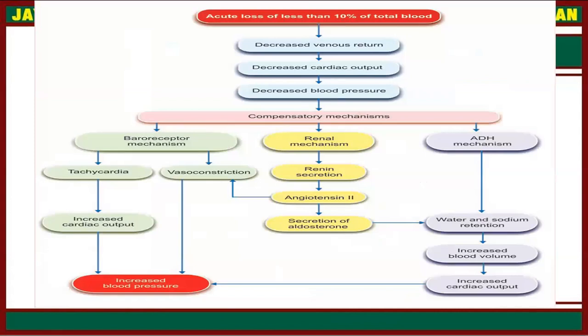In this diagram we can see acute loss of blood less than 10% of total blood. After that, decreased venous return, decreased cardiac output, decreased blood pressure, and compensatory mechanisms run — first the baroreceptor mechanism. After baroreceptor mechanism is activated, increased cardiac output and increased blood pressure occur. Vasoconstriction also causes increased blood pressure. In the renal mechanism, renin secretion causes conversion of angiotensin I to angiotensin II, and secretion of aldosterone. Aldosterone causes vasoconstriction, and angiotensin II also causes vasoconstriction, leading to increased blood pressure.